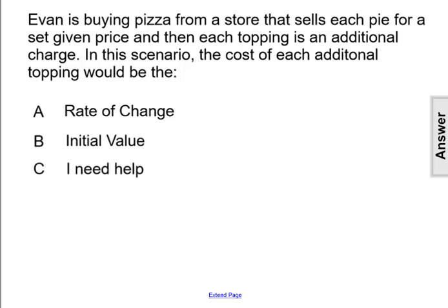Evan is buying pizza from a store that sells each pie for a set given price, and then each topping is an additional charge. In this scenario, the cost of each additional topping would be the A — rate of change — or B — the initial value? The cost of each additional topping is changing the cost of the pizza.